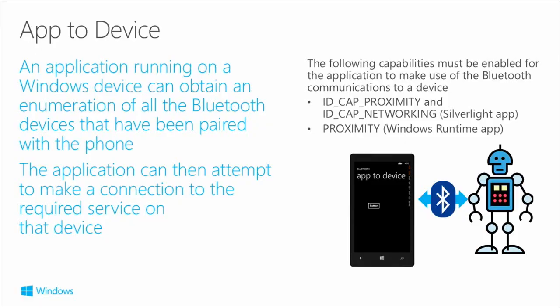Let's go through one of those in a little bit more detail. App-to-device: you can get an enumeration of all the Bluetooth devices that have been paired, and then it can attempt to make a connection to that service. You have to understand what protocol that device understands - you just get a stream socket object and basically write the correct bytes for whatever protocol that device understands onto the wire, and understand the handshaking protocol for message exchange for that device. So this is kind of a very roll-your-own kind of solution.